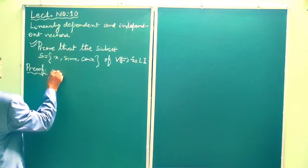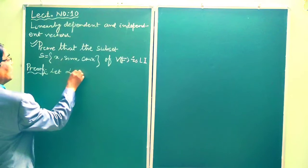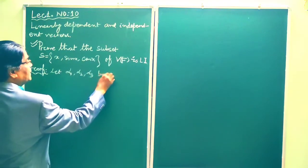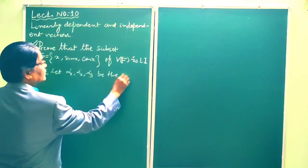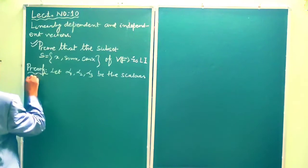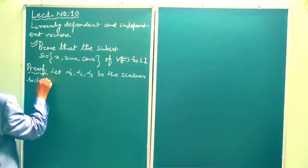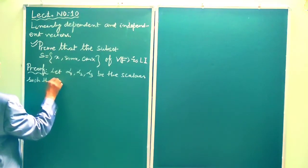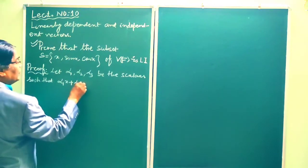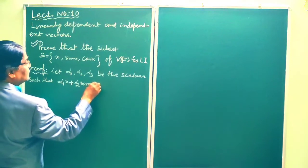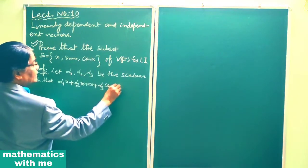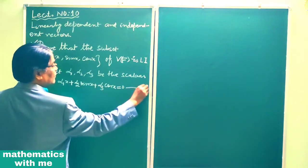To prove this, let α1, α2, α3 be scalars such that α1·x + α2·sin x + α3·cos x = 0. This is equation 1.